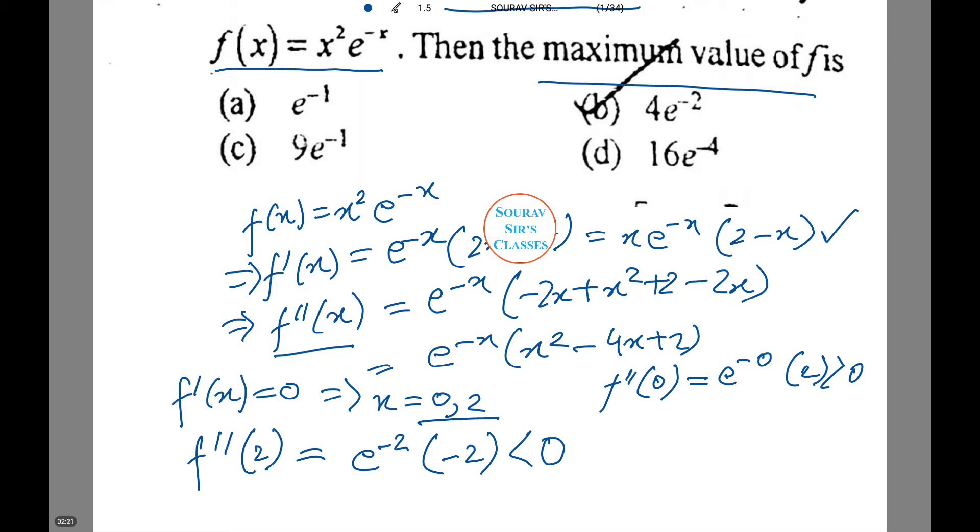Thus, at x equals 2, maxima occurs. The maximum value is 4e to power minus 2 by putting x equals 2 in our original function. Let's do another sum.